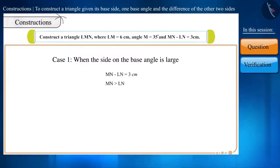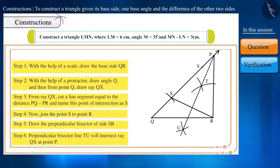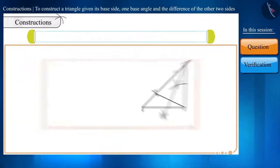In side MN, M is present, which means MN is a side formed on angle M. Therefore, the side on the given base angle is greater than the other side. So, we will do the construction of this triangle according to the steps of Case 1.